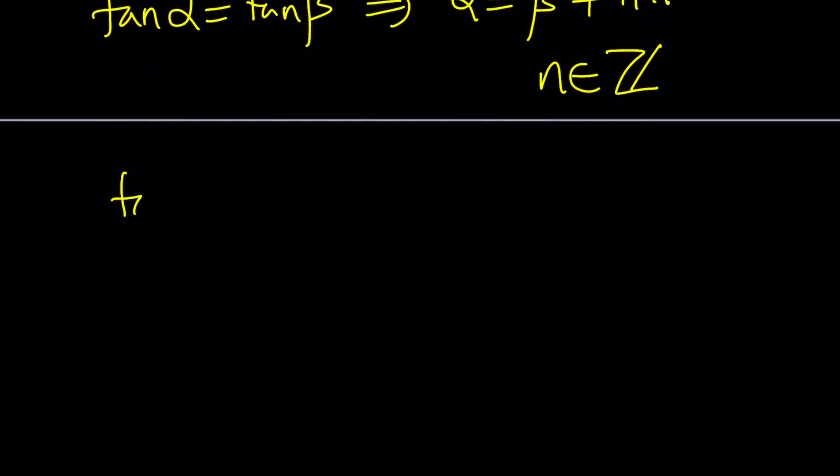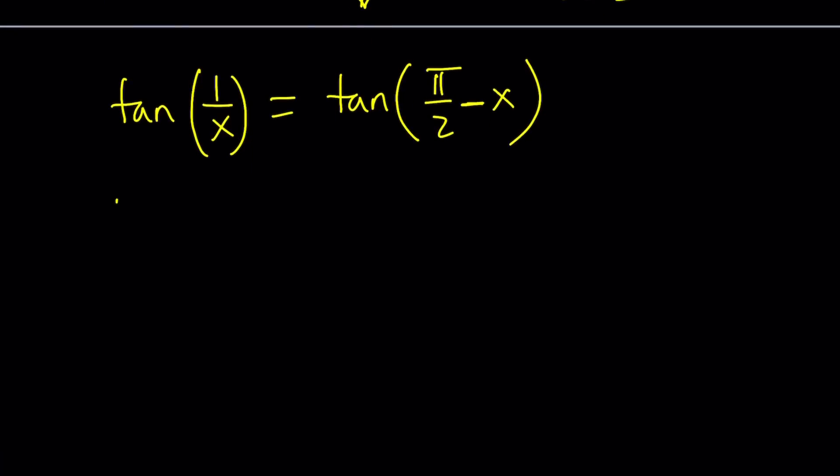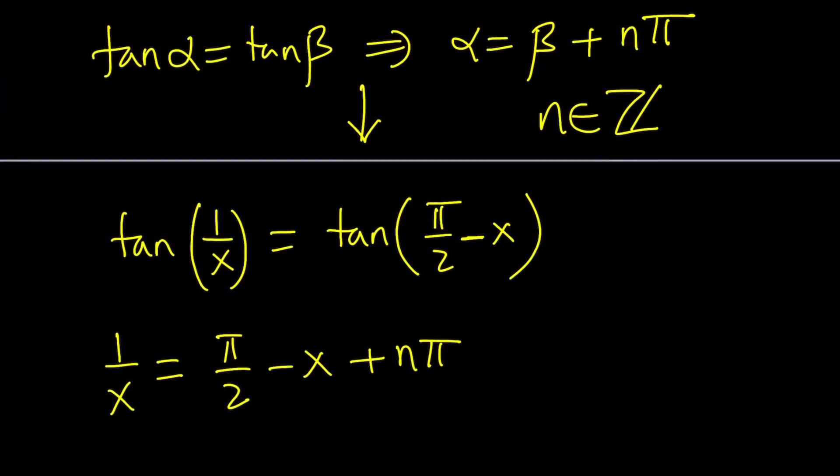Now let's go ahead and use that property. But let me rewrite the final result. So we got tangent 1 over x equals tangent pi over 2 minus x, which was the same thing as cotangent x, which was the same thing as 1 over tangent x. So far, so good? Let's continue. Now, from this formula, equation, whatever you want to call it, we can safely say that 1 over x equals, this is the critical part, make no mistake, pi over 2 minus x plus n times pi, where n is an integer. Needless to say, because I said it once.